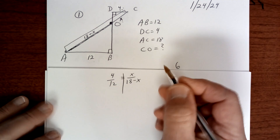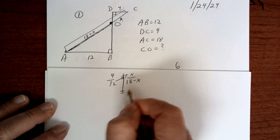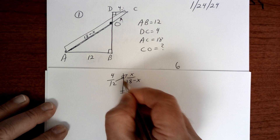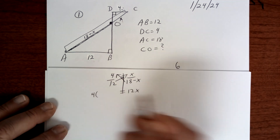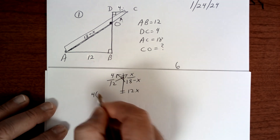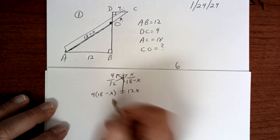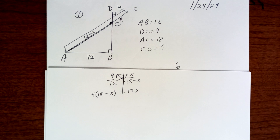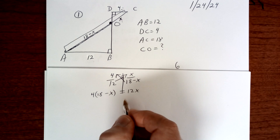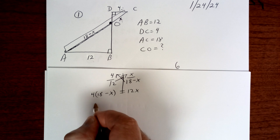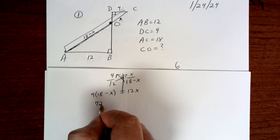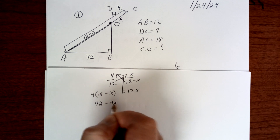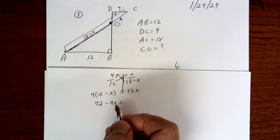So you're going to end up with 12X here, and then here you're going to end up with 4 times 18 minus X. Once you do that, you're going to end up with 72 minus 4X is equal to 12X.